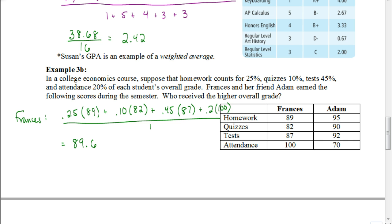Now let's look at Adam. Again, twenty five percent is based on the homework. He got a score of ninety five for his homework. Ten percent of his grade is based on his quizzes, and he got a score of ninety on his quiz. And forty five percent is based on tests. He got a ninety two on his test. And twenty percent of his grade is based on attendance. And he scored seventy in his attendance.